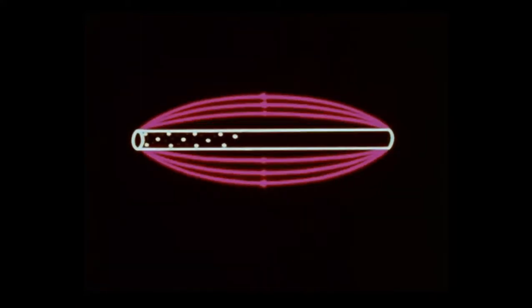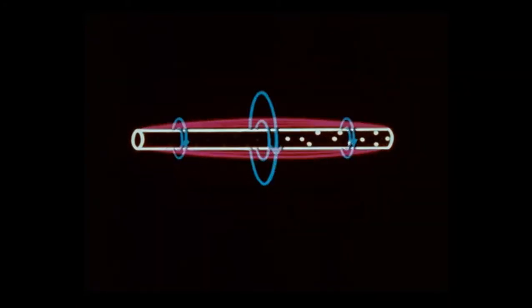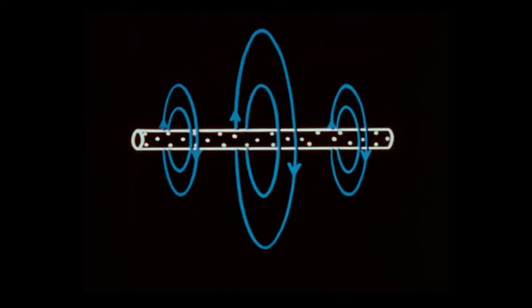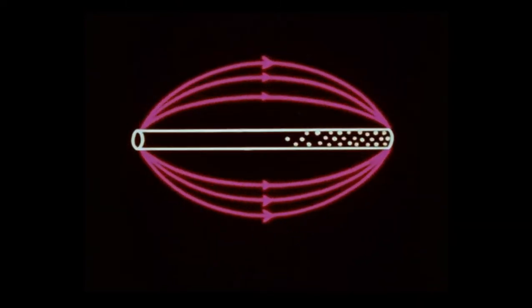The E and the H fields thus build and collapse 90 degrees out of phase with each other and constitute the antenna's immediate field.